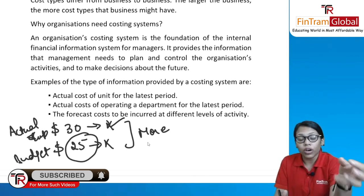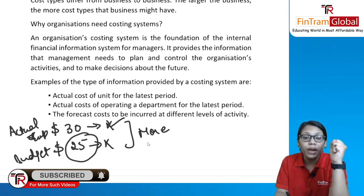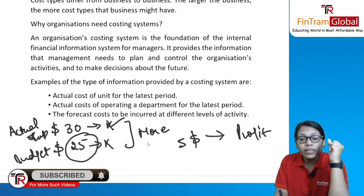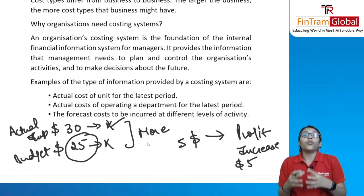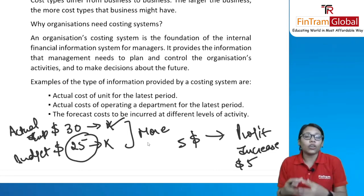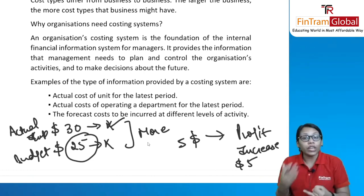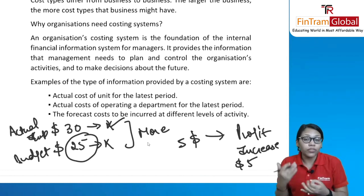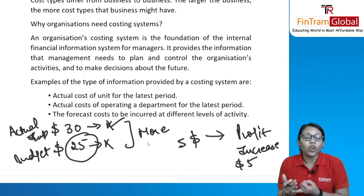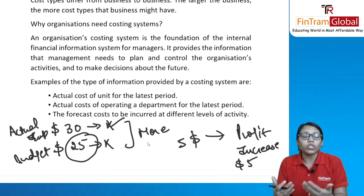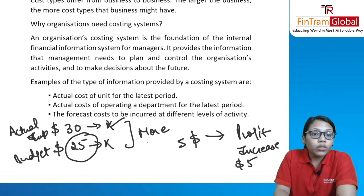If you can reduce your cost by $5, your profit is going to increase by $5 directly. If you don't understand the concepts of management accounting, you will never be able to calculate cost, analyze it, and therefore never make efforts to reduce over-expenditure.